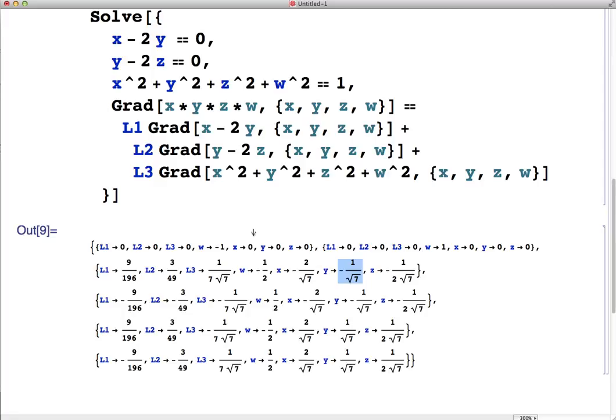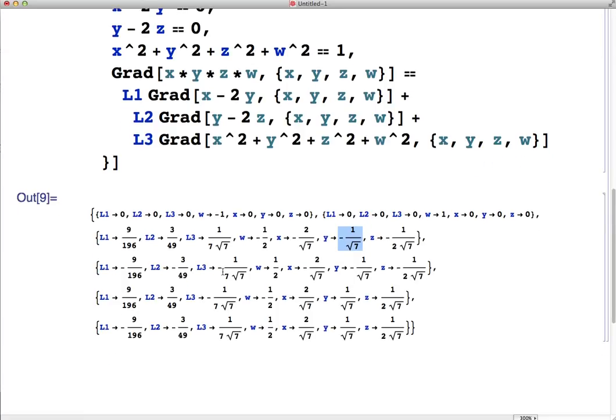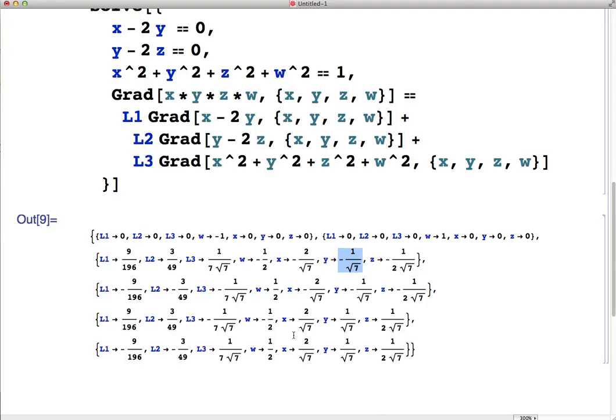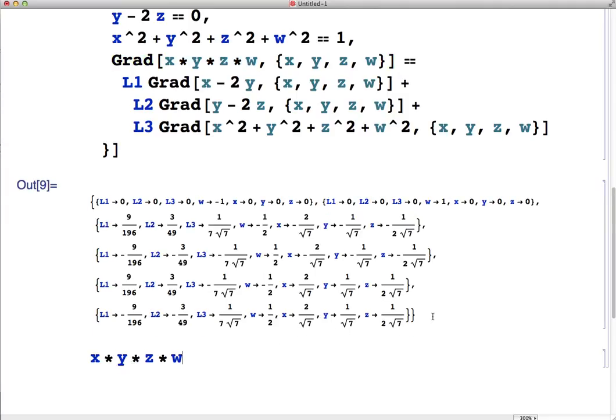I'm also going to show you how to save a little time by plugging them in automatically. So now we need to plug all these solutions in to test them. You can do that by hand. We can also use Mathematica to do that. So remember, we want to plug them into f, that's our function f we want to maximize. And then the notation for substitution is slash dot.